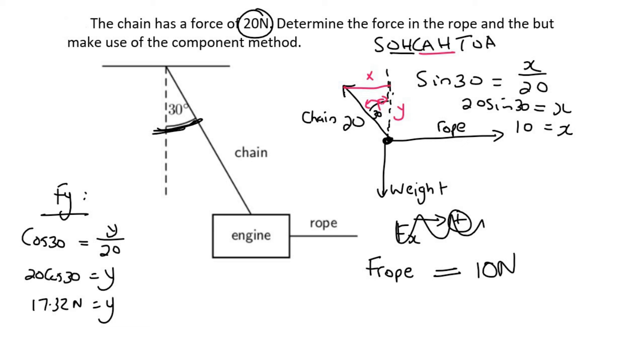So have a look at that. The chain has a vertical force of 17.32 acting upwards. And so the weight, which is acting downwards, would have to be the same. So the weight is going to be the same as the vertical component of the chain, which is 17.32 newtons. And we can say down over here, and we should have said right over here.